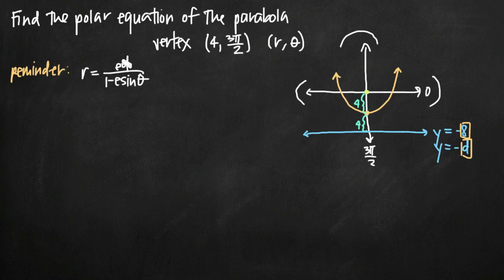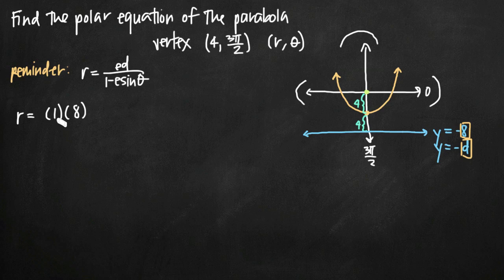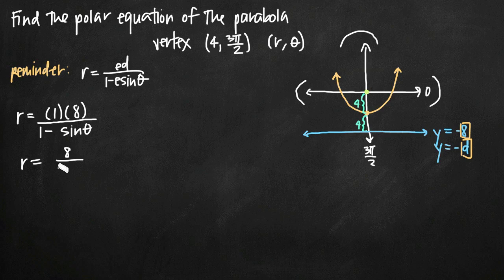When we're dealing with a parabola, eccentricity is always 1. If we have an ellipse, eccentricity has to be less than 1. If we have a hyperbola, eccentricity has to be greater than 1. But in the case of a parabola, eccentricity is always equal to 1. So we plug in: eccentricity is 1, d is 8, and in our denominator we get 1 minus eccentricity — which is 1 — times sine of theta. When we simplify, our equation is r equals 8 over 1 minus sine of theta.